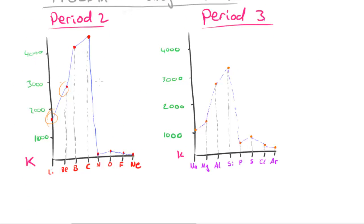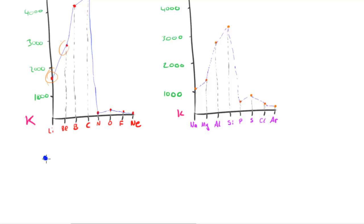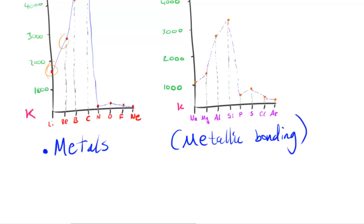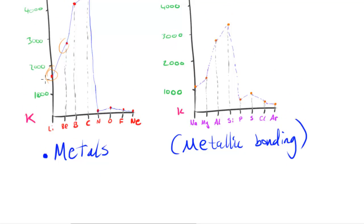For the first two elements in period 2 — lithium and beryllium — these are both metals. Since they're both metals, what's going to be happening between the atoms is metallic bonding. So why does beryllium have a much higher boiling point than lithium, given that both have metallic bonding?